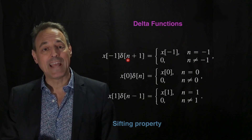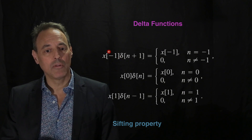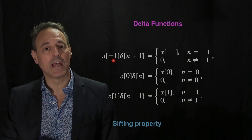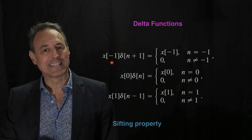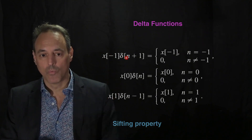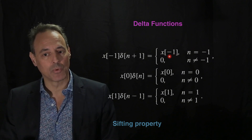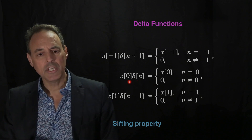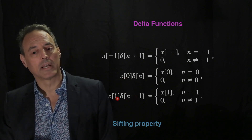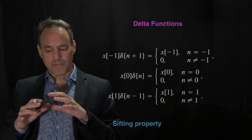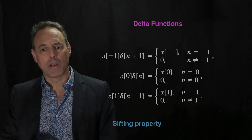So the argument is zero when n equals minus one, meaning this function is zero everywhere except at n equals minus one, and the only value that matters is x at minus one. Multiplying by the delta function sifts out the value of x at one position — wherever the kick happens. For instance, if I kick at n equals zero I pull out x(0), and if I kick at n equals one I pull out x(1). This sifting property simply pulls out the value of the function at whatever index I kicked it.